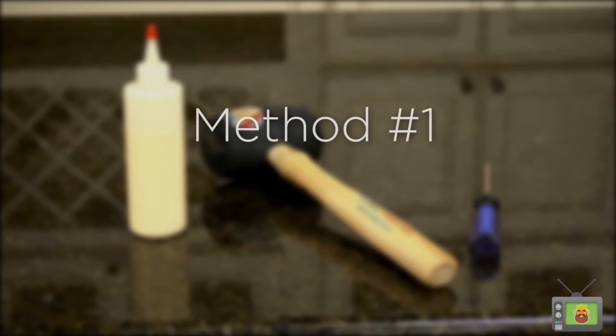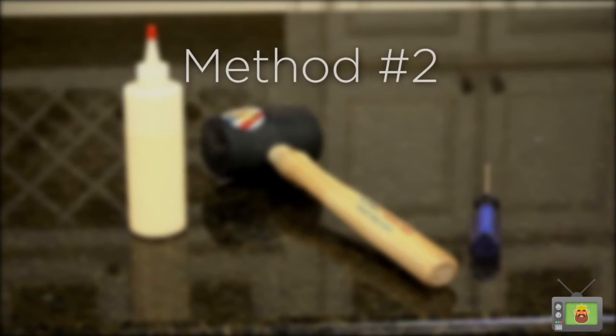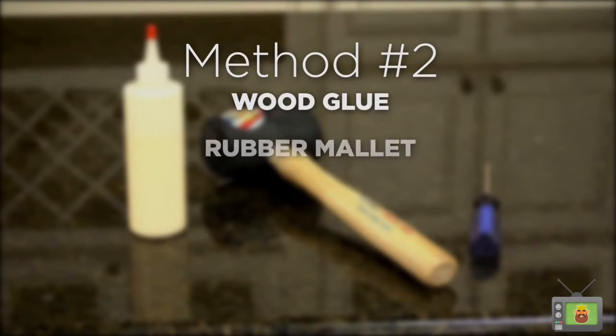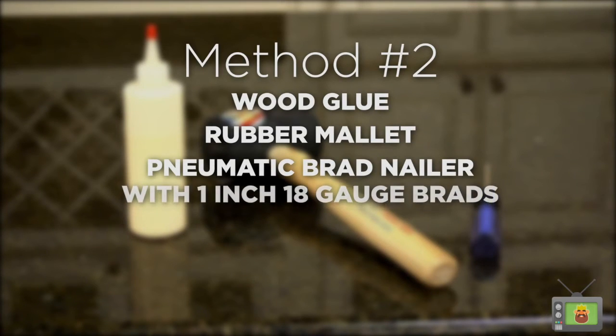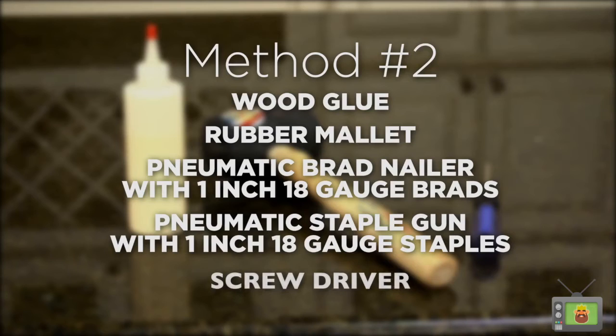First construction method requires wood glue, rubber mallet, and a screwdriver. Second construction method requires wood glue, rubber mallet, pneumatic brad nailer with 1 inch 18 gauge brads, pneumatic staple gun with 1 inch 18 gauge staples, and a screwdriver.